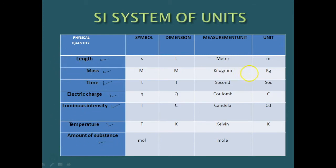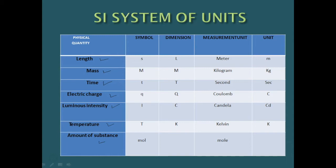For length, we are using a measurement called meter. For mass, we are using kilogram. For time, we are using second. For electric charge, we are using coulomb. For luminous intensity, we are using candela. For temperature, we are using kelvin. And for amount of substance, we are using mole. These are the different measurement units we use to measure the physical quantities like length, mass, time, etc.